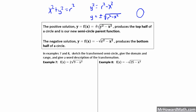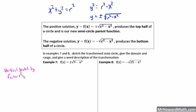That's why we need the plus or minus to make a full circle. When we only use the plus part, that's the top half; only the minus part gives the bottom half. So let's look at these examples. Example 7: we are asked to sketch the transformed semicircle, give the domain and range, and give a word description of the transformation. The 2 out in front of the radical is a vertical stretch by a factor of 2. Our r squared value is 9, so the square root of 9 is 3, meaning our radius equals 3, and we have no other transformations.